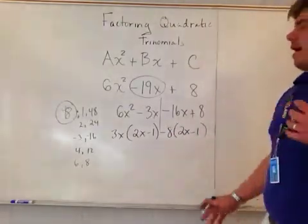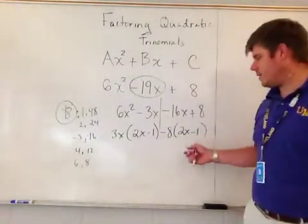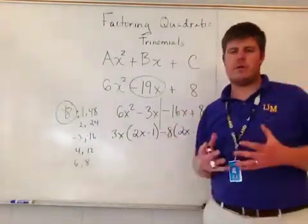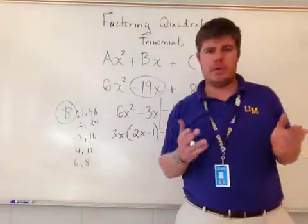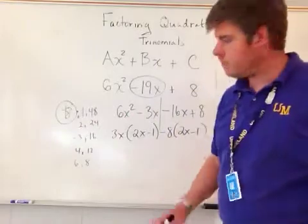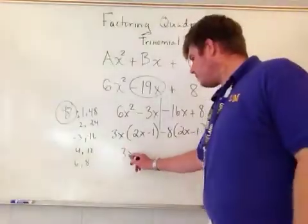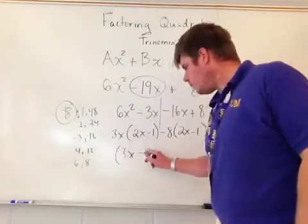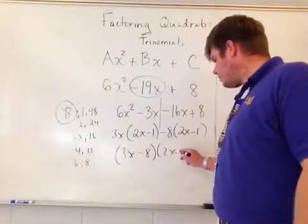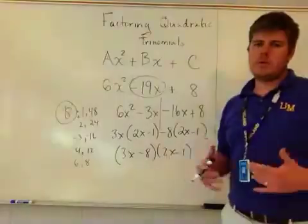I've now grouped them, and I've got my two same groups. I end up getting (3x - 8)(2x - 1), and that's your AC method. The AC method is literally you multiply the leading coefficient and the constant.